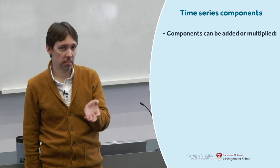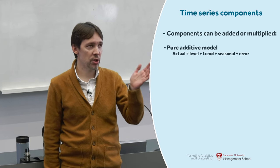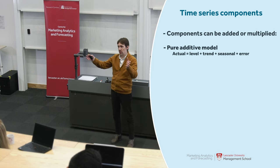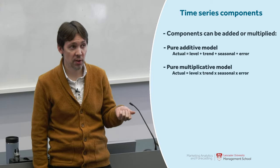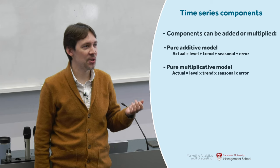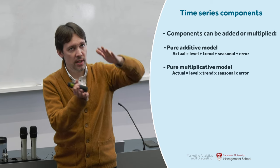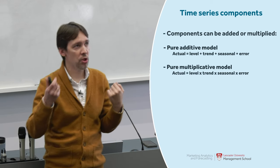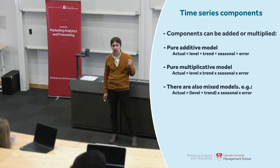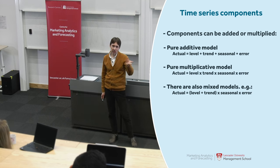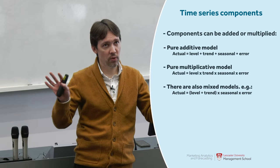These components can be added or multiplied, and depending on this operation we will have different dynamics. There is a pure additive model where you add level, trend, seasonality, and error to get the actual value. There is also a pure multiplicative model which assumes we multiply each element. Multiplicative models become especially important in real life because many things happen multiplicatively — for example, seasonality tends to increase by x percent rather than x units from one season to another. There are also some mixed models, which we will come back to when we discuss exponential smoothing, the ETS model.